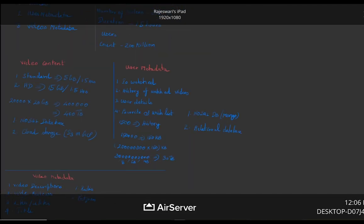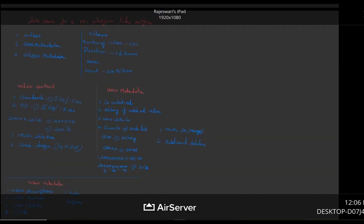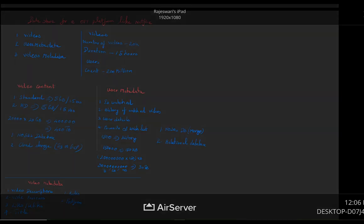I think now you got a broad understanding on how we can store our data for an OTT platform. And also you know what are the different kinds of data that we have to store and the choice of data stores that are available for us to store the data related to video, user, and metadata. Let's meet in my next video. Thank you.